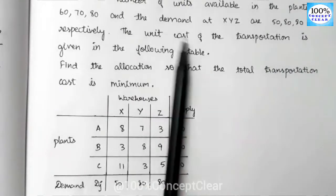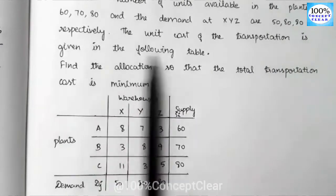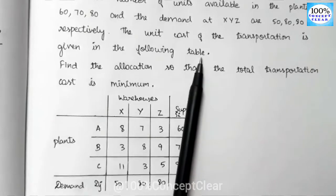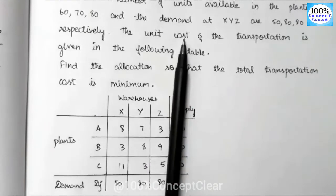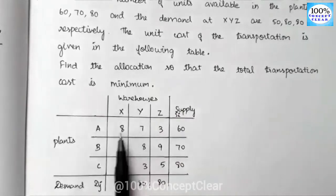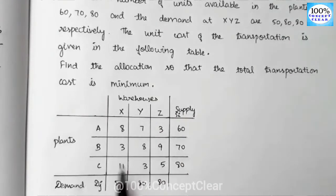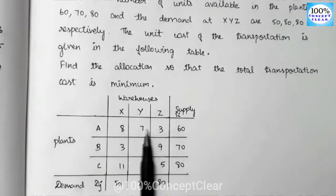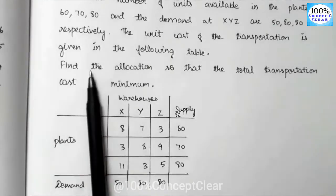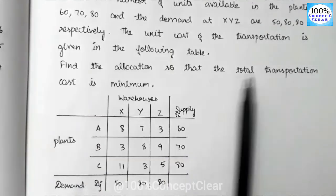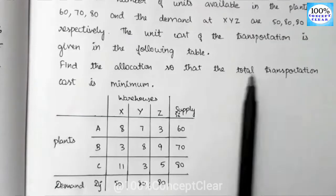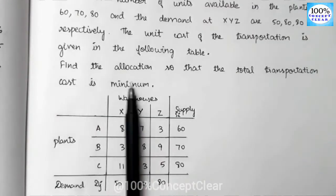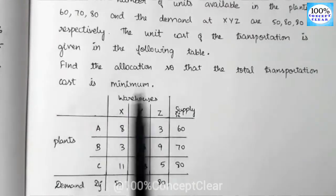The unit cost of the transportation is given in the table. This is a minimization type of transportation problem. We need to find the allocation so that the total transportation cost is minimum.